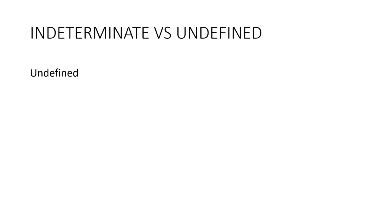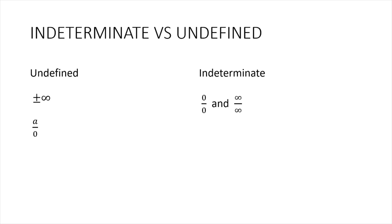First, let's talk about the difference between indeterminate forms and undefined expressions. Undefined expressions are those that approach positive or negative infinity, meaning the limit does not exist. These can be rational expressions where the numerator approaches a non-zero real number and the denominator approaches zero, resulting in positive or negative infinity. Indeterminate forms, on the other hand, are rational expressions where both numerator and denominator approach zero, or both approach infinity — giving us zero over zero and infinity over infinity. These are the two basic indeterminate forms.